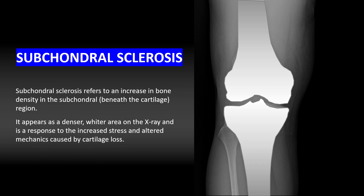Subchondral sclerosis refers to an increase in bone density in the subchondral region of the bone, which is beneath the cartilage. It appears as a denser, whiter area on the x-ray — these white lines on the edges of the articular surface. This is a response to the increased stress and altered mechanics caused by cartilage loss.